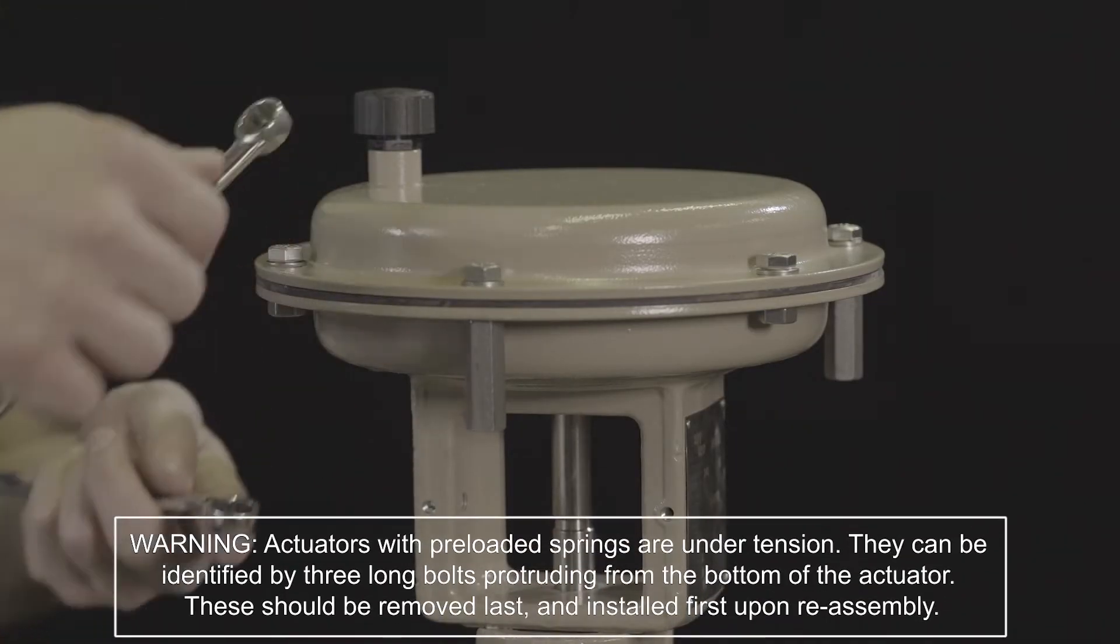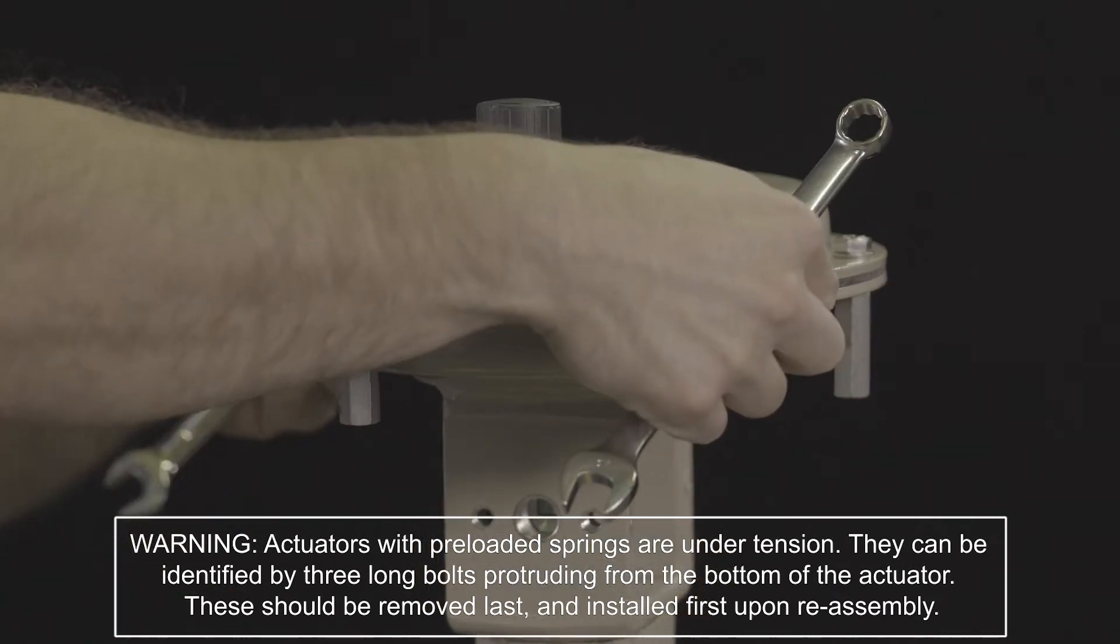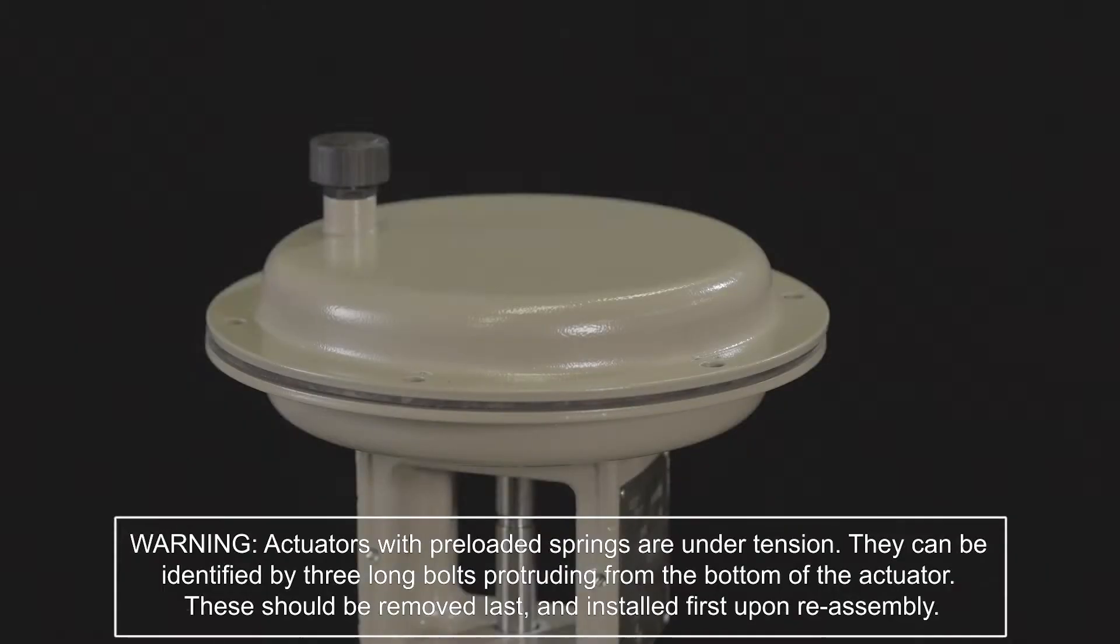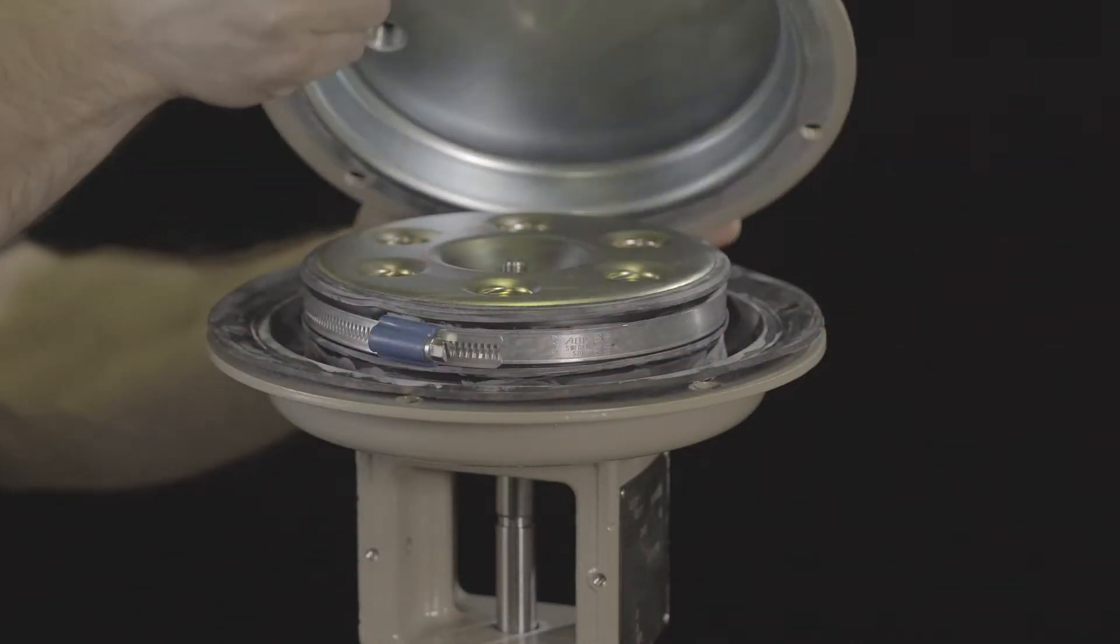With the actuator removed from the valve, unscrew the nuts and bolts on the diaphragm case. Lift off the top diaphragm case.